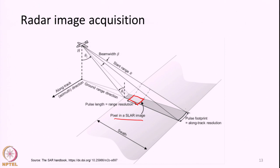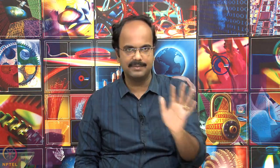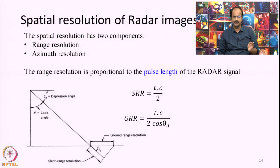In a side-looking airborne radar (SLAR) image, the pixel will keep on varying — it may look different in the near range versus the far range. So the pixel has a different meaning in both the range direction and the azimuth direction. The total angle for which the radar beam transmits defines the swath width. The entire footprint covered by the radar beam in the across-track direction defines the swath. Each pixel in the range and azimuth direction is defined independently based on two different properties of the radar system. The spatial resolution — simply put, the pixel size — in a radar image is defined in two directions: range resolution and azimuth resolution.